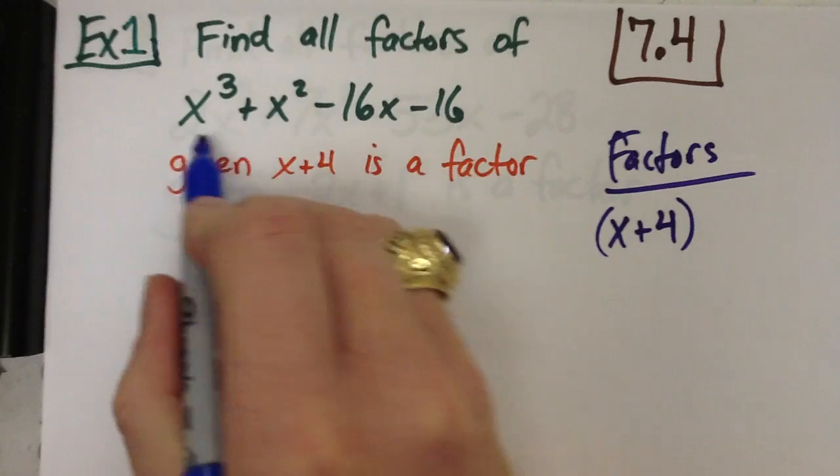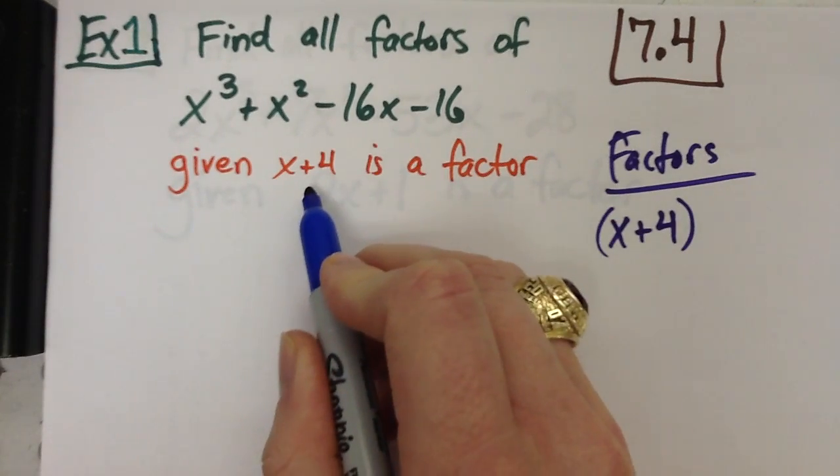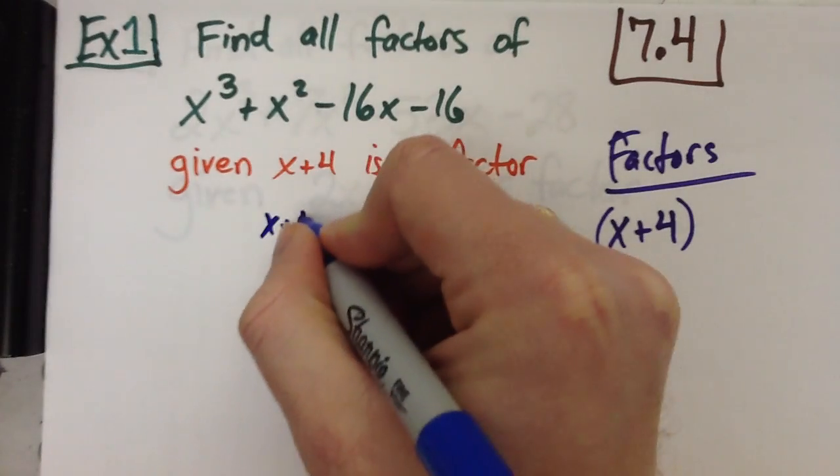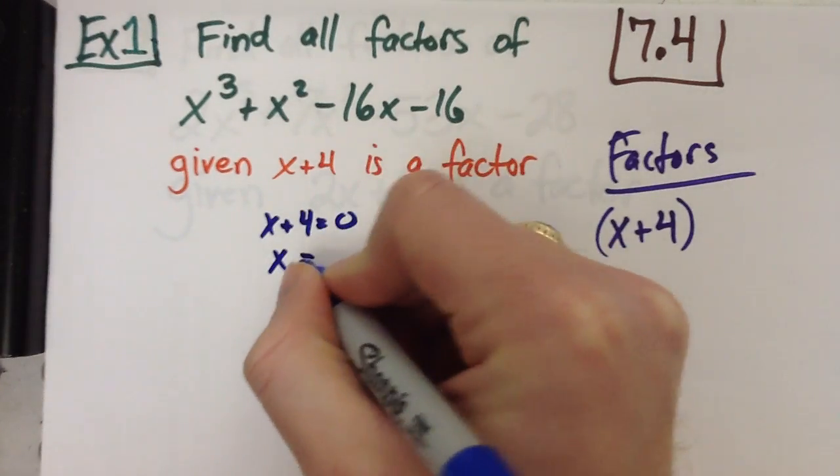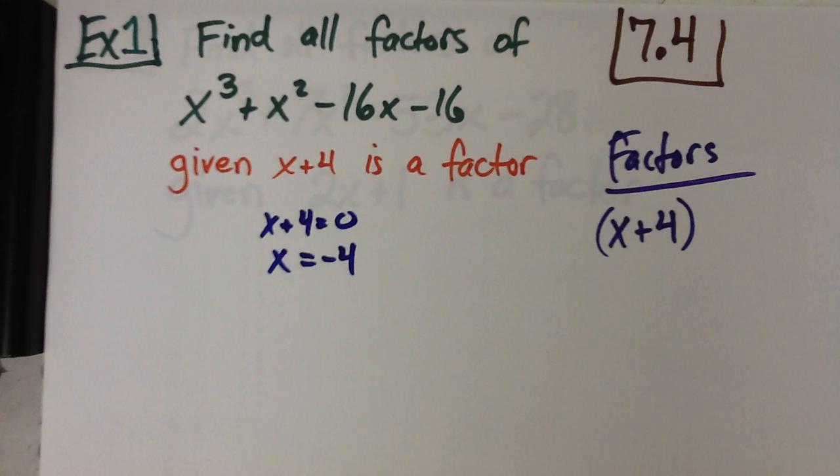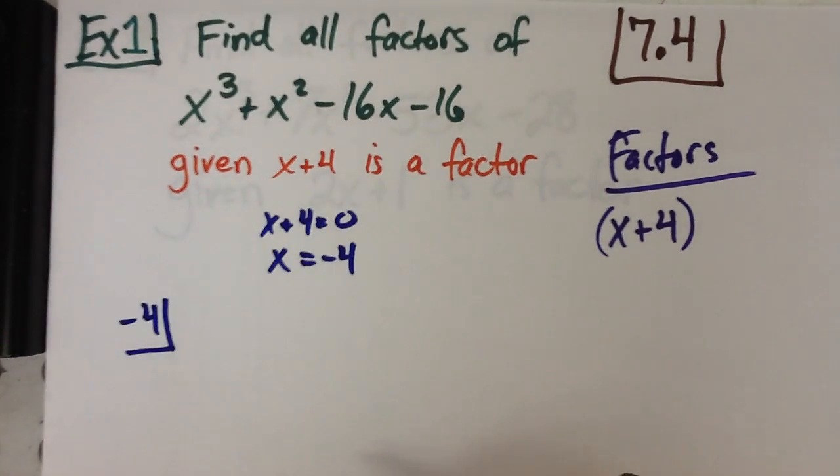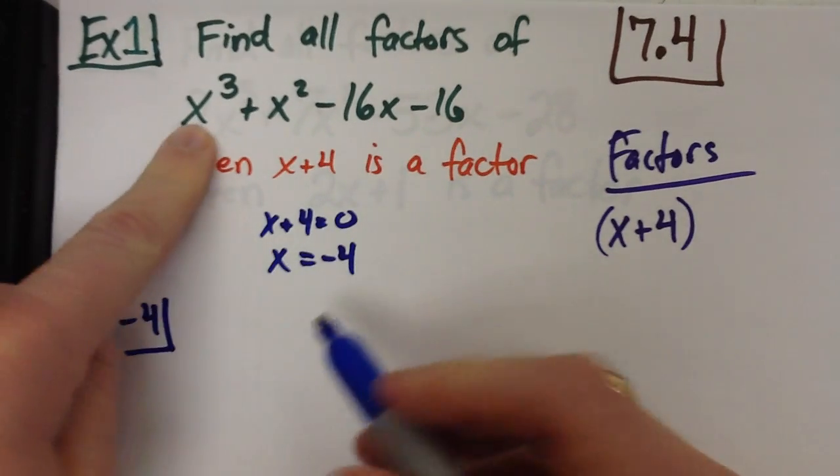What I need to do, if I'm going to divide the polynomial by the factor I do have, I need to take that x plus 4, set it equal to 0, and get what would be the solution. But that's what you have to put in the box when you do synthetic division. The negative 4.